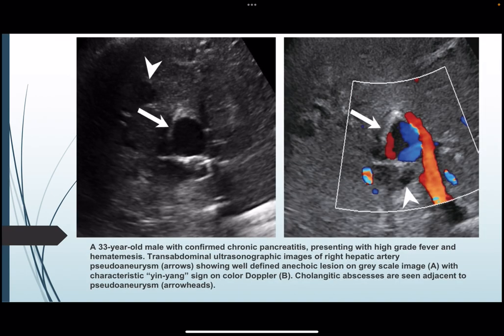A 33-year-old male with confirmed chronic pancreatitis presented with high-grade fever and hematemesis. Transabdominal ultrasonographic images of the right hepatic artery pseudoaneurysm showed a well-defined anechoic lesion on gray-scale image with characteristic yin-yang sign on color Doppler. A cholangitic abscess was seen adjacent to the pseudoaneurysm.